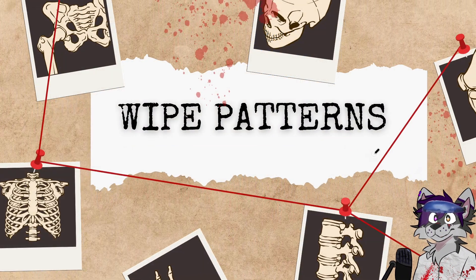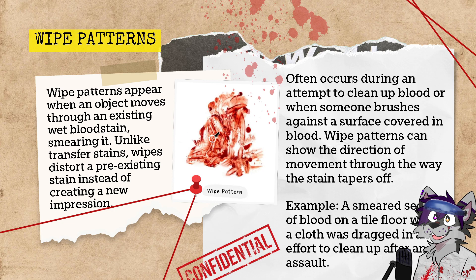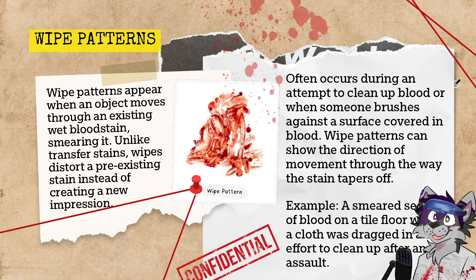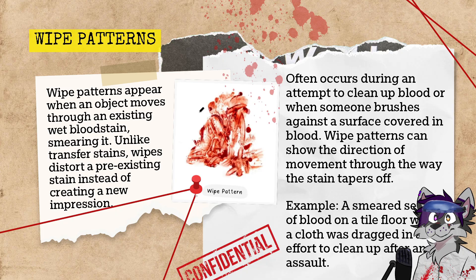Next we have wipe patterns. Wipe patterns appear when an object moves through an existing wet blood stain, giving it a smear effect. Unlike transfer stains, wipes distort a pre-existing stain instead of creating a new impression — there was already blood there and it made smear marks. These often occur during an attempt to clean up blood or when someone brushes against it. Wipe patterns show the direction of movement through the way stains taper off. An example would be a smeared section of blood on a tile floor where a cloth was dragged after an assault.